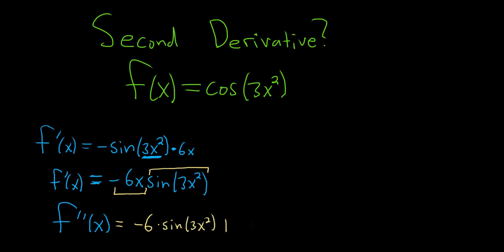Plus the first, which is negative 6x, times the derivative of the second. That will be cosine of 3x squared — the derivative of sine is cosine — times the derivative of the inside, so 6x.